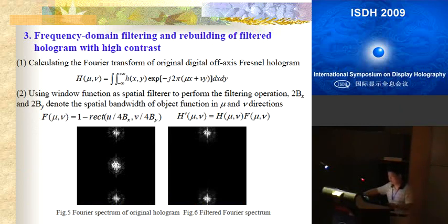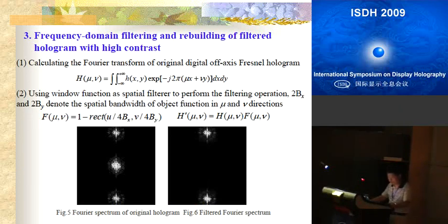Our proposal is a new method which includes frequency domain filtering and rebuilding of the filtered hologram with high contrast. The first step is calculating the Fourier transform of the original digital hologram. Then we use a window function as a spatial filter to perform the filtering operation. Figure 5 is the Fourier spectrum of the original hologram, and Figure 6 is the filtered Fourier spectrum.